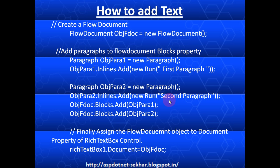So for adding text to this RichTextBox control, first we have to create the FlowDocument instance, and after that we have to create the paragraphs, and finally we have to set that FlowDocument to this RichTextBox. We will see it in an example.